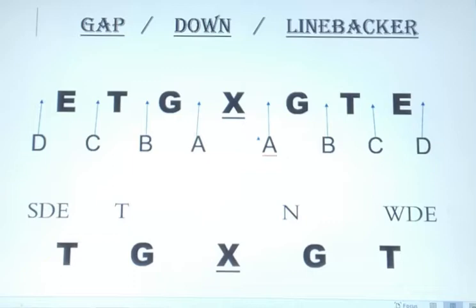The second term in gap down linebacker is 'down,' which refers to down defensive linemen. In all defenses — whether it's a 3-4, a 4-3, a 4-2-5, a 3-3, a 3-5, or a 3-5-3 — all defensive athletes are responsible for a gap within that scheme. So after checking the gap, we check for down defensive linemen.